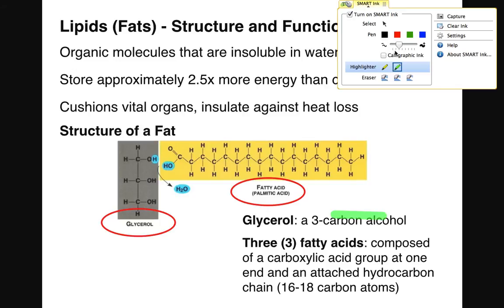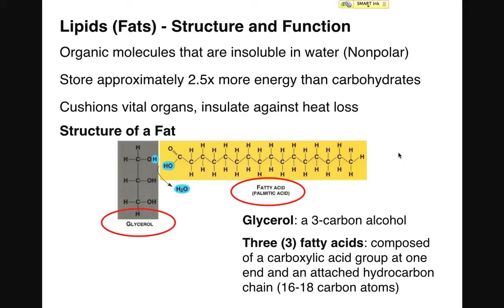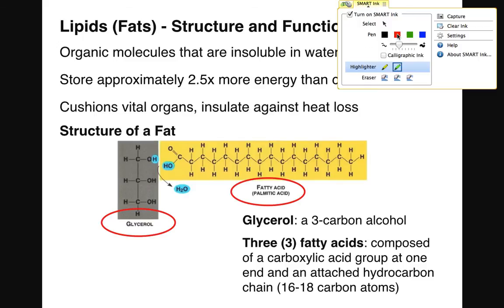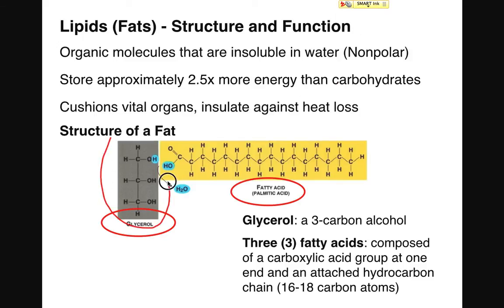When we look at the structure of the fat, fats are composed of two different types of biological molecules. The first biological molecule is glycerol — it's really a three-carbon alcohol with each of three hydroxyl groups. And the rest of the fat will be composed of three fatty acid molecules. So a fat is typically one glycerol molecule and three fatty acid molecules, linked using dehydration reactions.